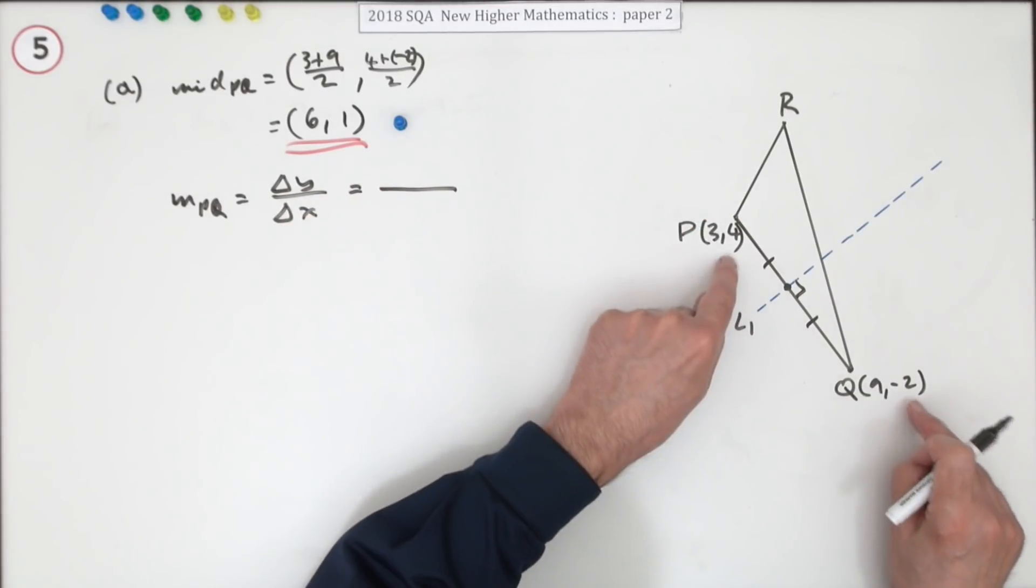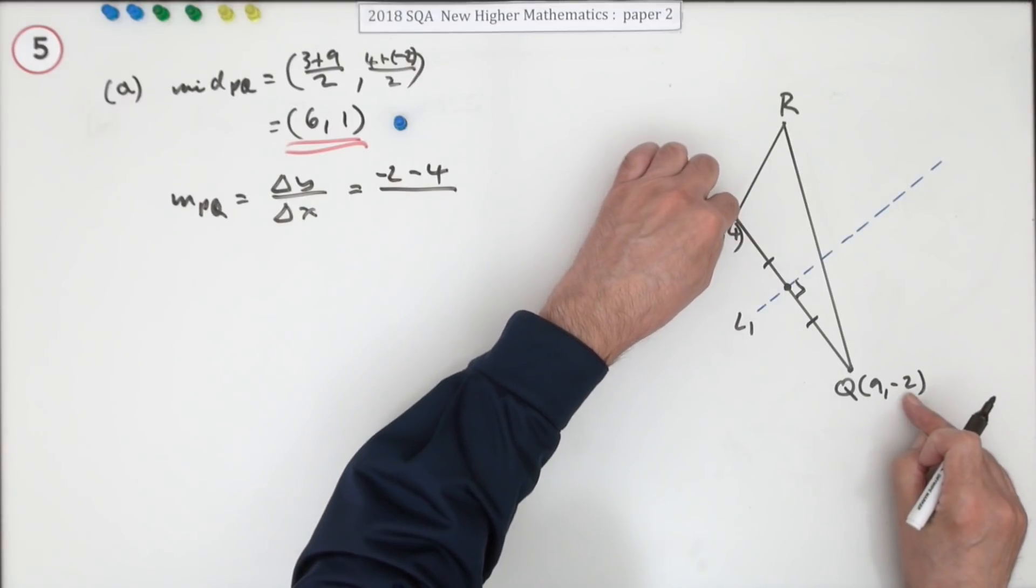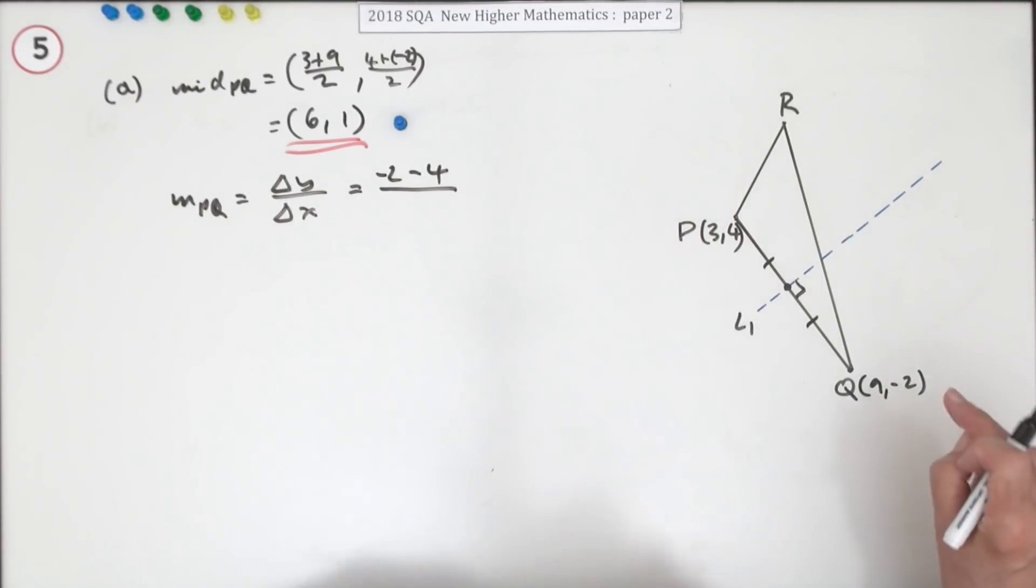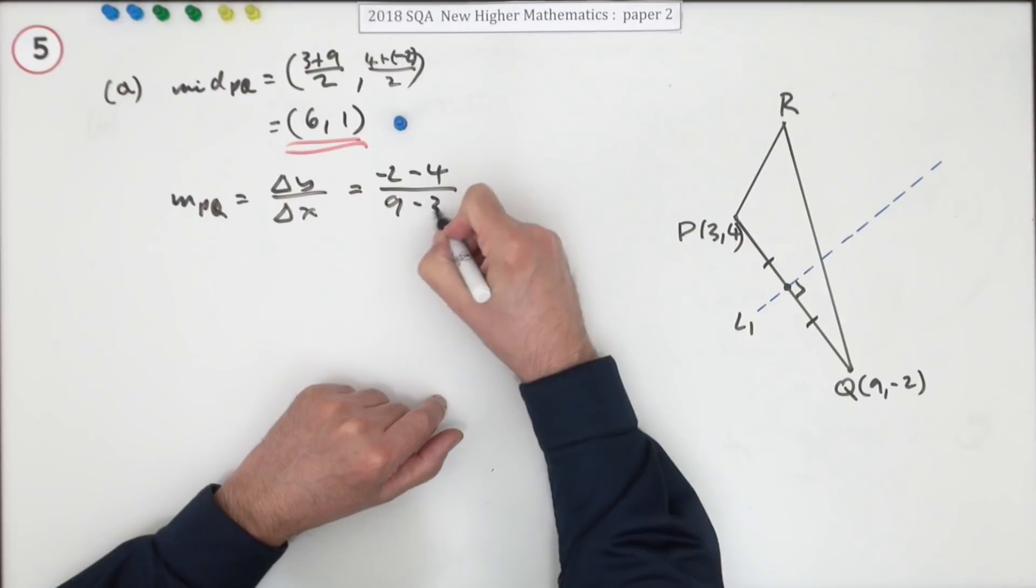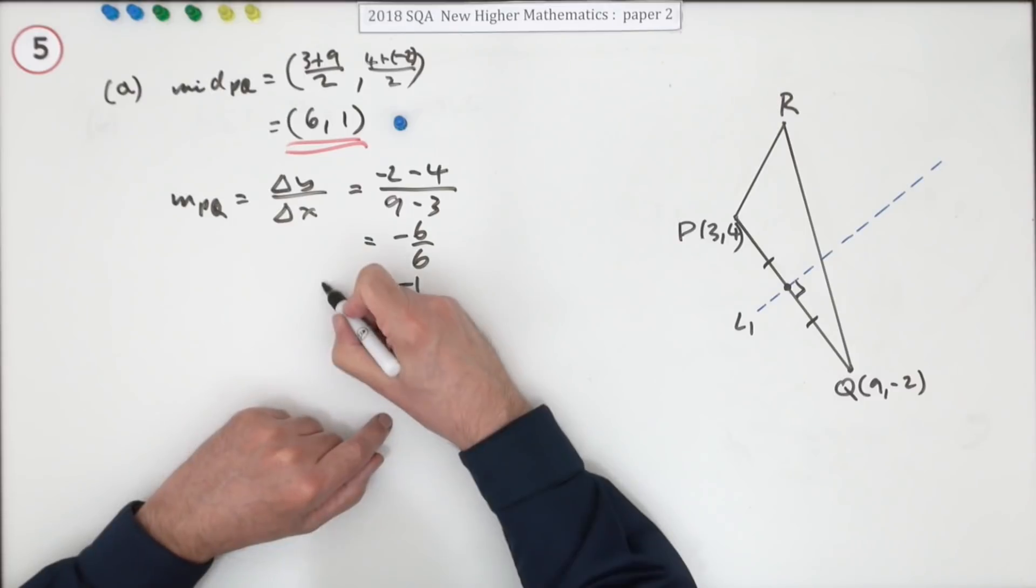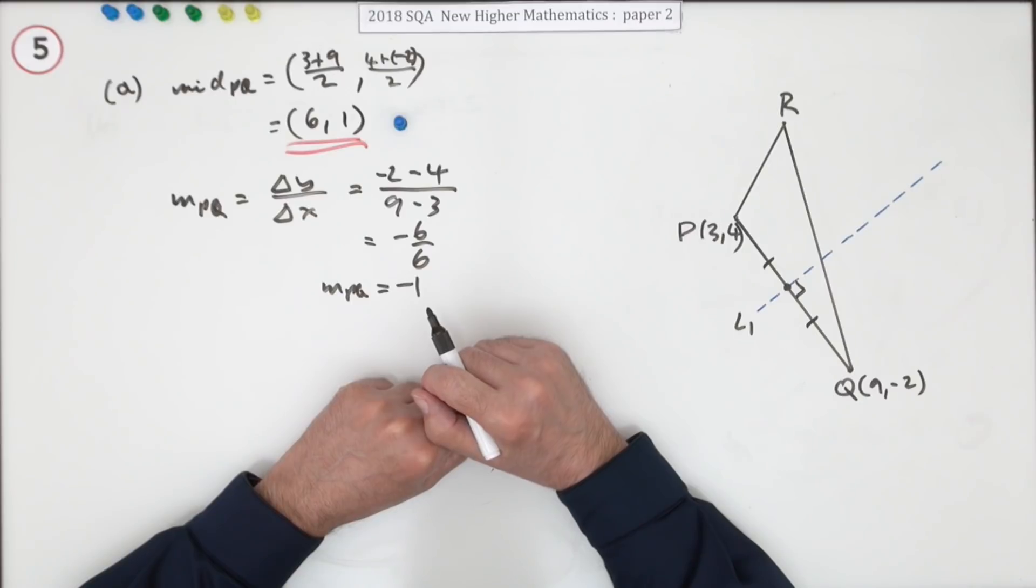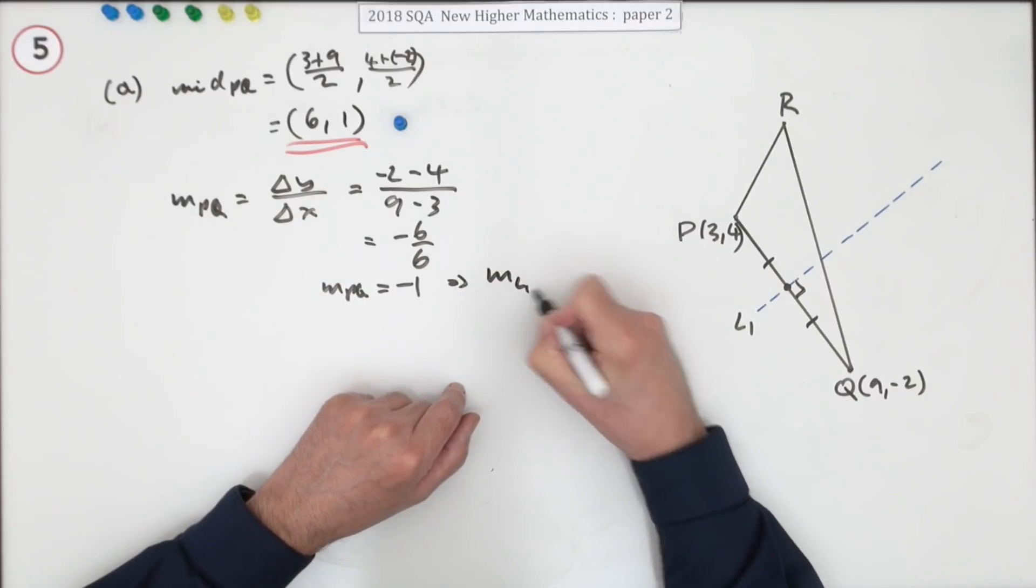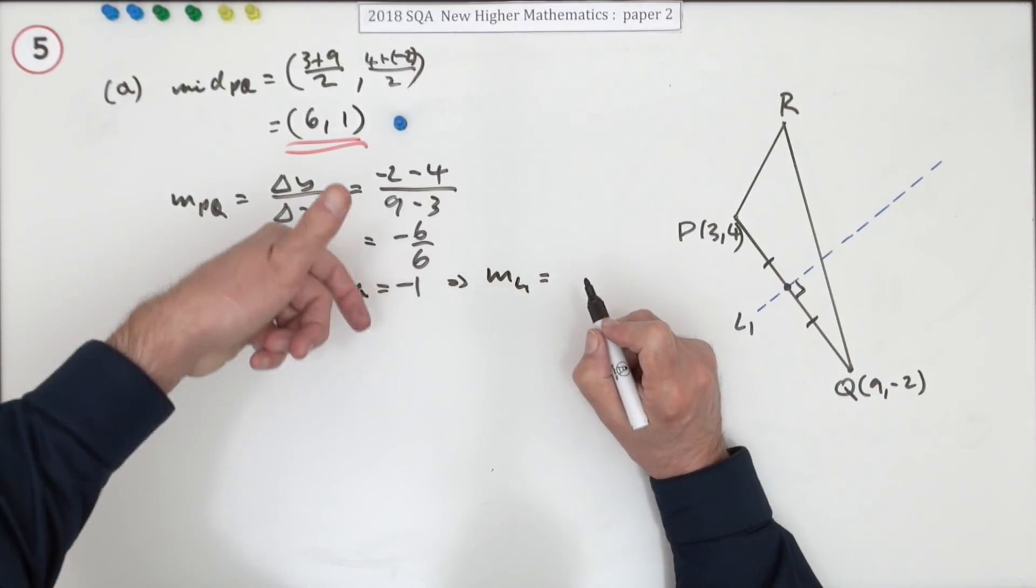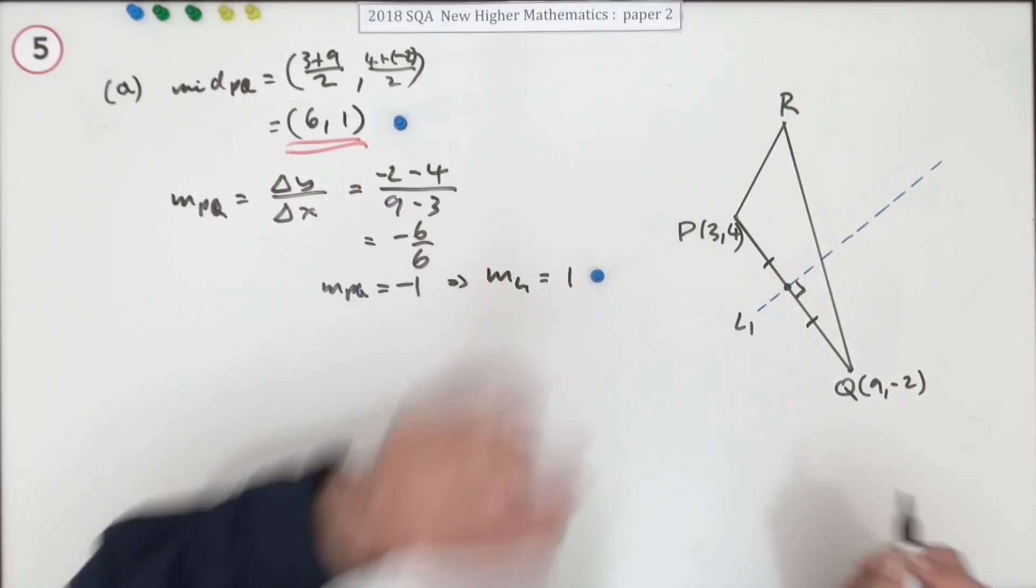Difference in the y coordinates. Make sure you use the y coordinates on top. Negative 2 take away 4. Or you could write 4 take away negative 2, but just make sure you keep the other one in the same order. I've done this take away that, so I'm doing 9 take away 3. Keeping it in the same order. That comes to negative 6 upon 6, which is negative 1. So the gradient of PQ is negative 1. You're not getting a mark for that. You're only getting one mark for then saying that means the gradient of line 1 will be the negative of the reciprocal, turn upside down and change sign, which is 1. Now you get a mark.